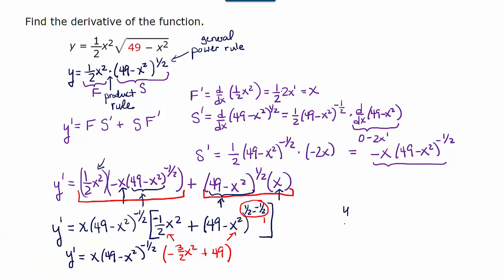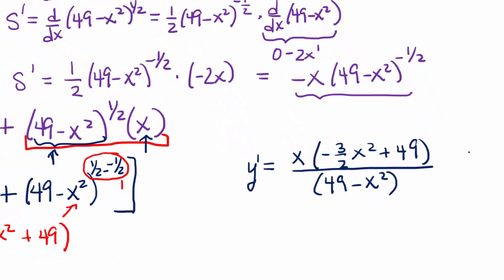We're getting there. So now we have y prime equals, I'm going to bring the negative exponent into the denominator, leave the x up top, x times negative three halves x squared plus 49 over 49 minus x squared. Now this is still technically a complex rational expression, meaning it has fractions within fractions, and I don't like that. So to get rid of this fraction three halves that's in the numerator.